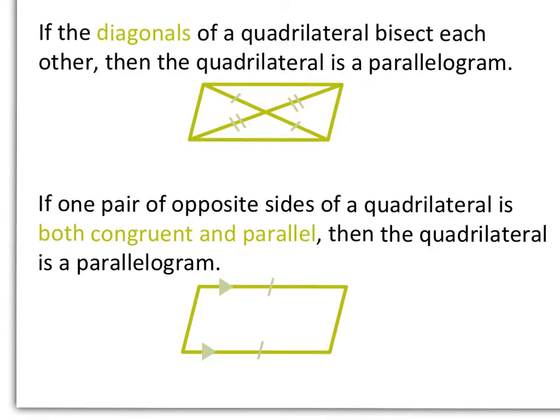If the diagonals of a quadrilateral bisect each other — remember that means to cut in half — then the quadrilateral is a parallelogram. Also, if one pair of opposite sides of a quadrilateral is both congruent and parallel, then the quadrilateral is a parallelogram.